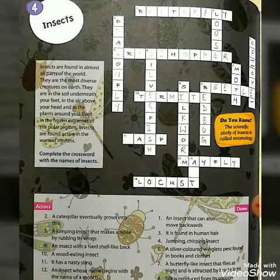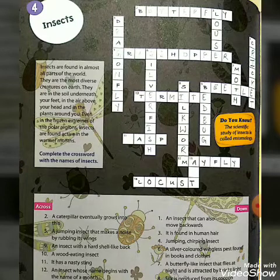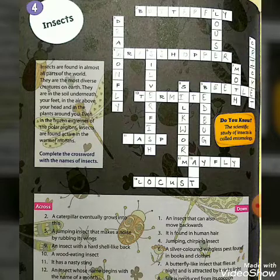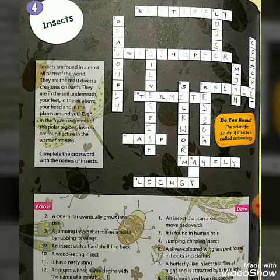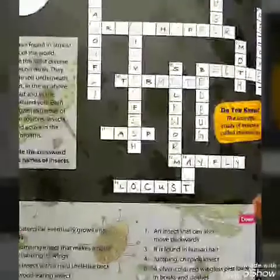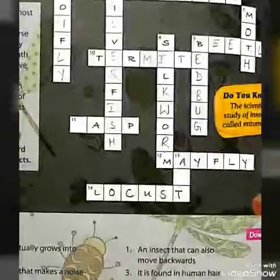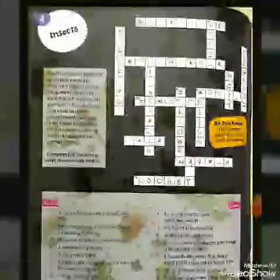Now twelfth one. An insect whose name begins with the name of a month. The month is May. Your answer is mayfly. M-A-Y-F-L-Y. You can see twelfth one on your screen.